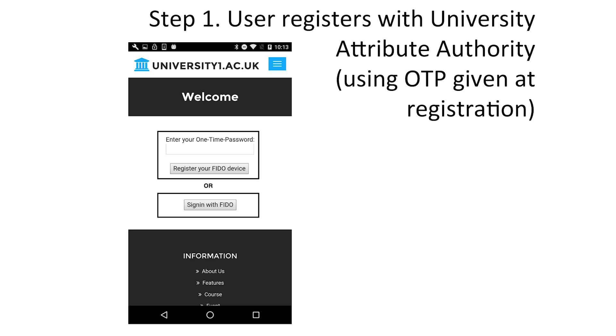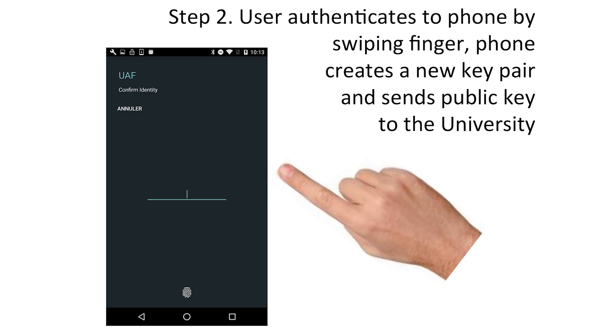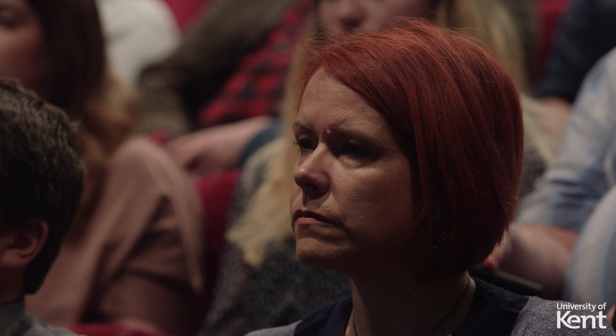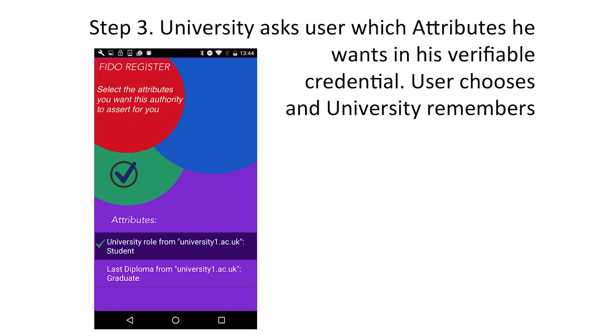The first step is registering your mobile phone with the issuer. When you come to Kent and register as a student, you receive a piece of paper with a one-time password. You go to the University of Kent website, type in the one-time password, the phone generates a key pair and sends it to the website, which associates that key pair with the one-time password and therefore knows it's you on future visits. You must strike your finger on the phone to authorize issuing the key pair — protecting you so that if anyone steals your phone they cannot use your credentials without your fingerprint. The university then asks which attributes it holds about you should be issued — for example, student status or degree.